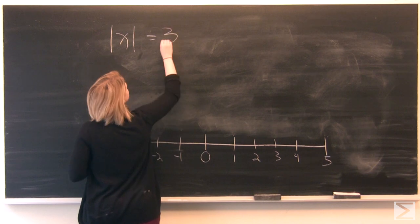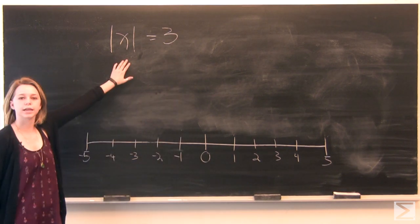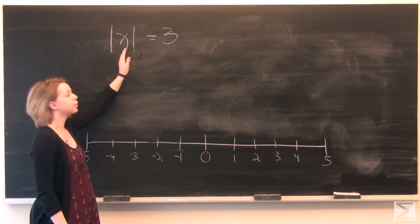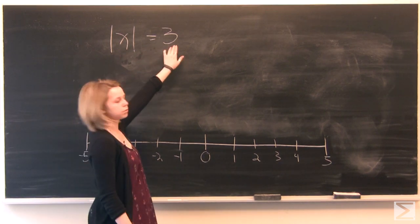When you see absolute value written, it looks like this. You've got two parallel lines outside of your variable x, and that is equal to 3.